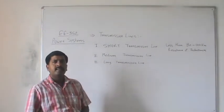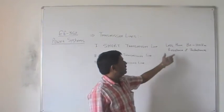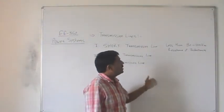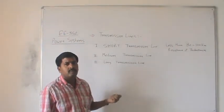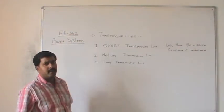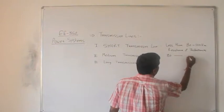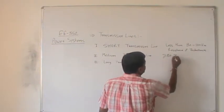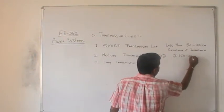We neglect capacitance in the short transmission line. When analyzing a short transmission line, we only consider resistance and inductance. The length is so small that the capacitive effect is negligible. For medium transmission lines, the length is between 80 km and 150 to 200 km.